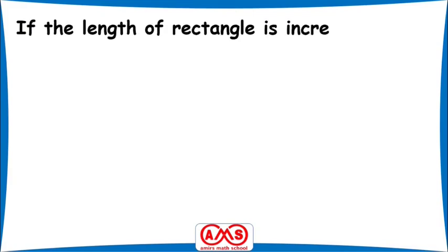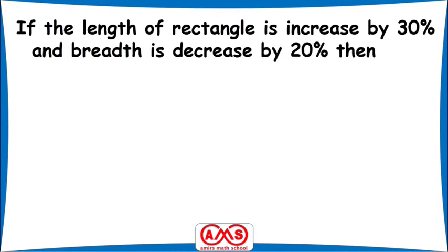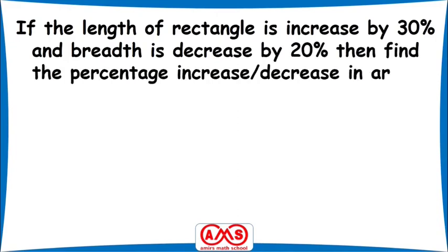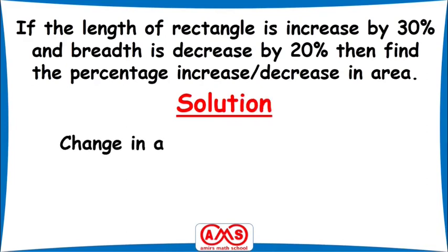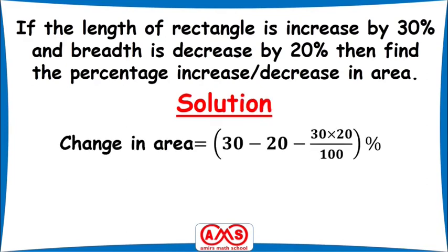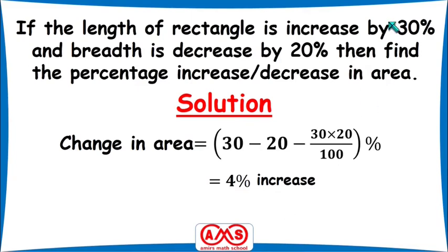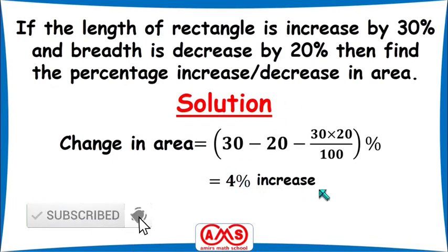Let's apply the formula: if the length of a rectangle is increased by 30% and the breadth is decreased by 20%, find the percentage of increase or decrease in area. Change in area equals 30 minus 20 minus (30 times 20) divided by 100 percent. After calculation we get 4%. Since the value is positive, the area increases by 4%.